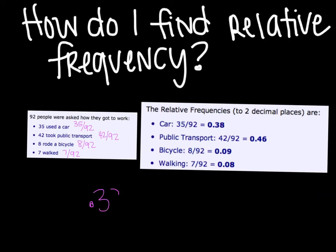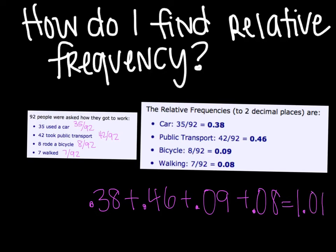So I have 0.38 plus 0.46 plus 0.09 plus 0.08. And when I do that, I end up getting 1.01. And the reason for that is because of the rounding. So if you're off by just a hundredth of a point, that's fine. If you're off by a tenth, so if I had 1.1, that would be concerning. But relative frequency should add up to 1 when you're using decimals or be extremely, extremely close.